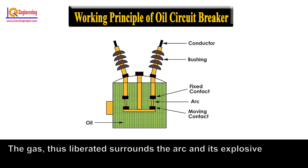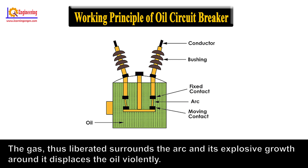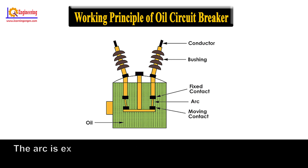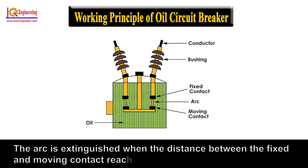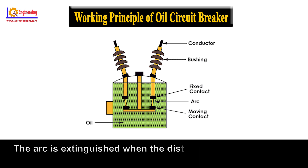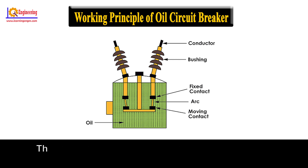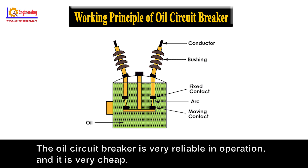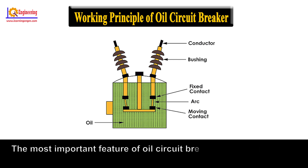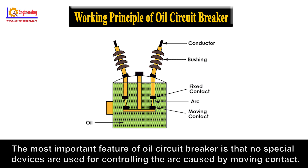The gas thus liberated surrounds the arc, and its explosive growth around it displaces the oil violently. The arc is extinguished when the distance between the fixed and moving contacts reaches a certain critical value, depending on the arc current and recovery voltage. The oil circuit breaker is very reliable in operation and it is very cheap. The most important feature is that no special devices are used for controlling the arc caused by the moving contact.